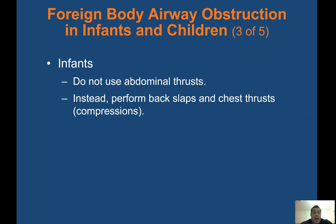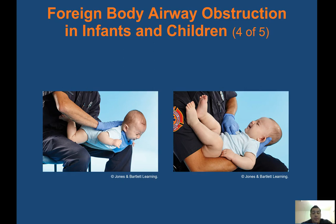For infants, do not use abdominal thrusts. Instead, perform back slaps and chest thrusts. Support the infant with one forearm under the body and the hand supporting the head — infants cannot support their own head. Give five back slaps, then flip the baby over and give five chest thrusts. Alternate until the object is expelled or the infant becomes unresponsive.